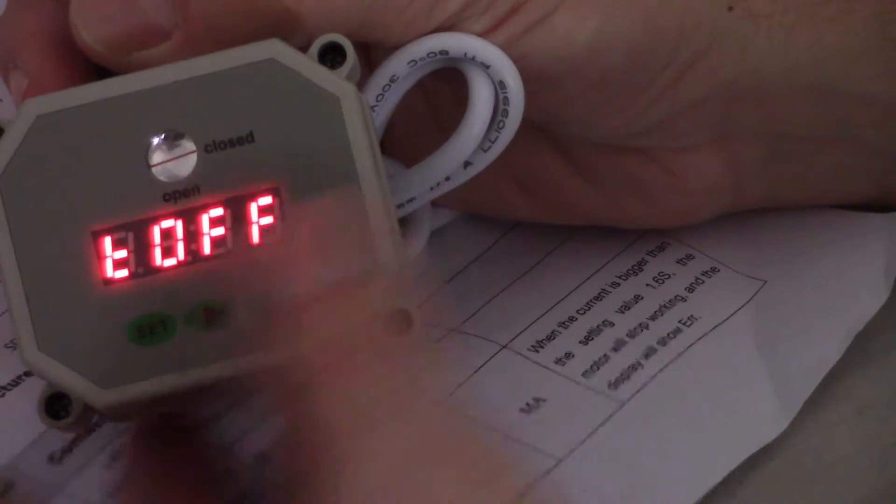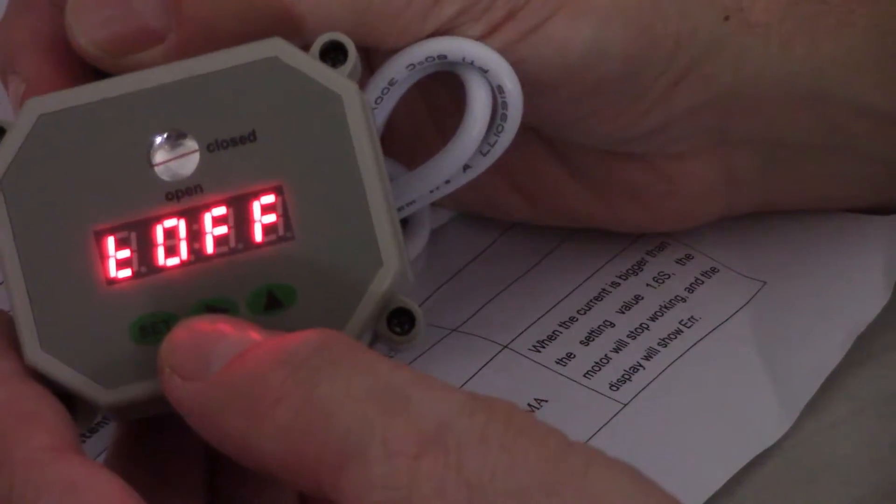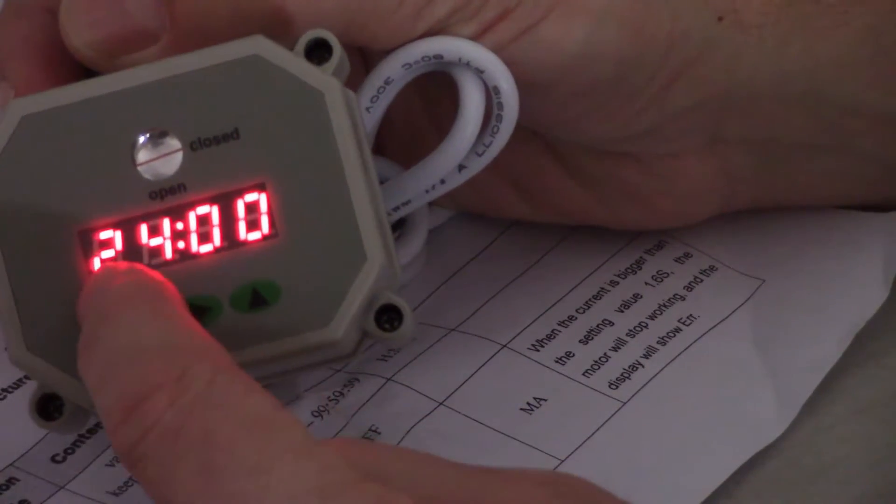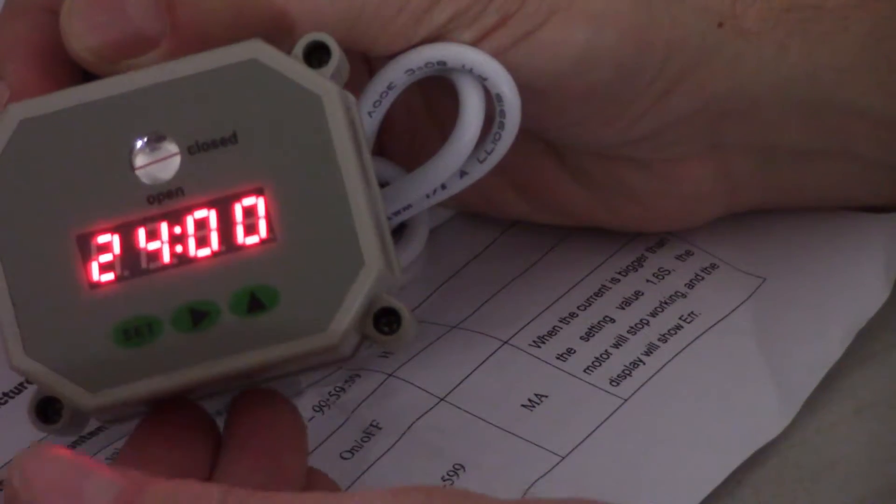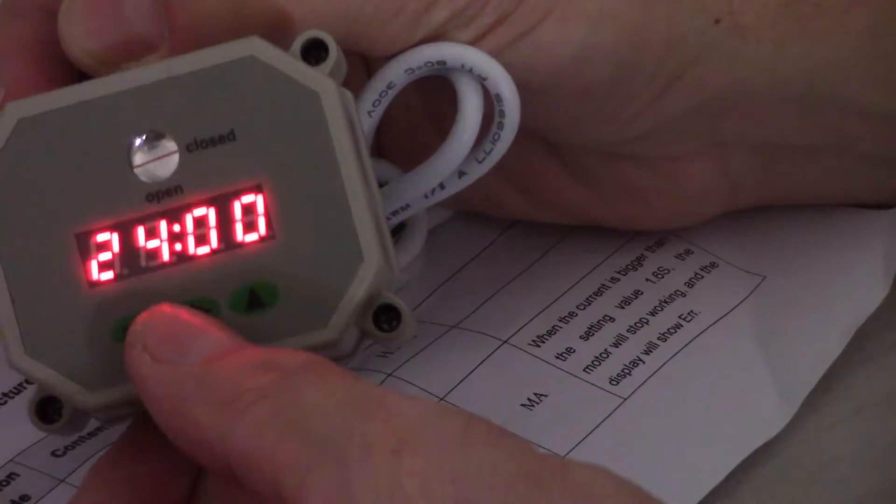Now you've got your T off, the time the valve is going to remain off. You press your scroll to the right button and here I have my two, here I have my four, and here I have my zero and my zero.